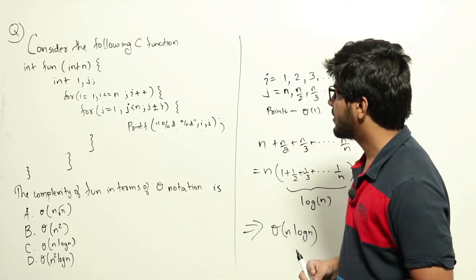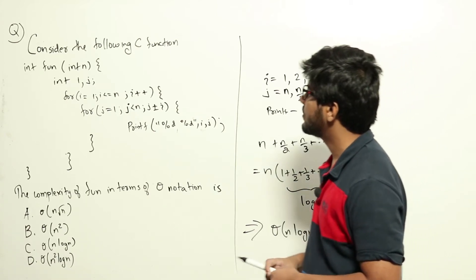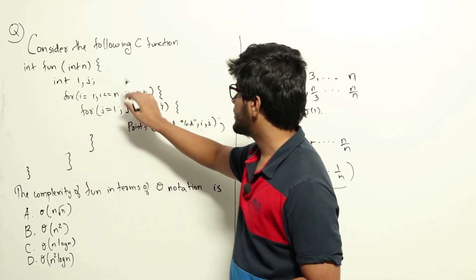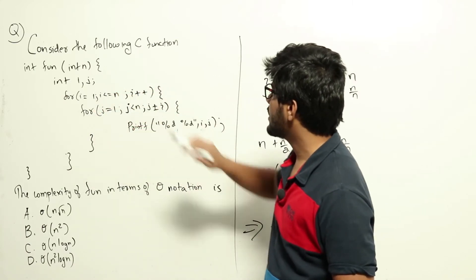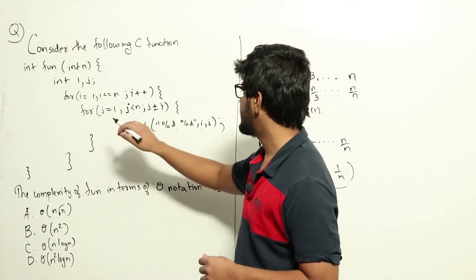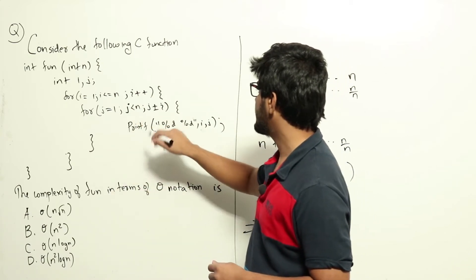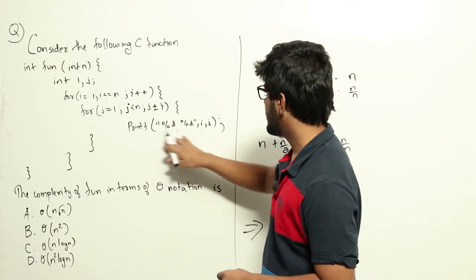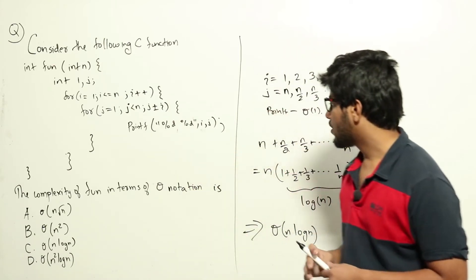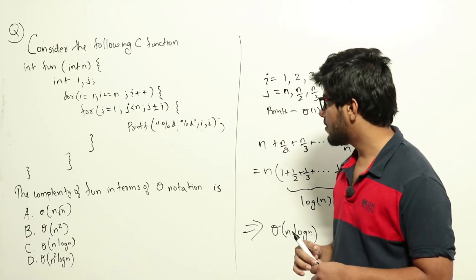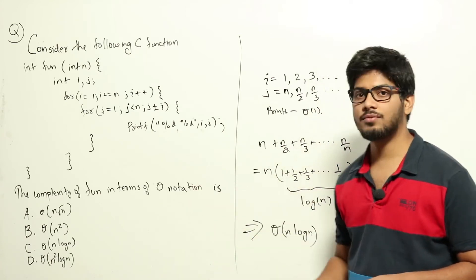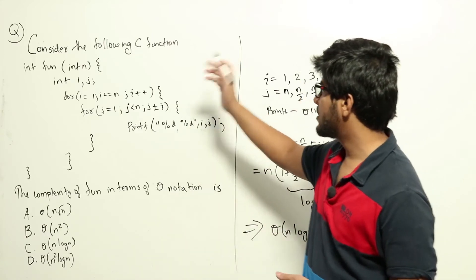Consider the following C function: int fun(int n). The function has variables i and j. For i equal to 1, i less than or equal to n, i plus plus; for j equal to 1, j less than n, j plus equal to i; printf percentage d percentage d i j. The complexity of fun in terms of theta notation is — we have four options and need to find out the time complexity.